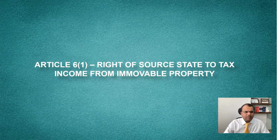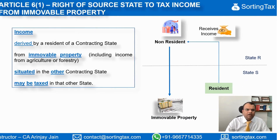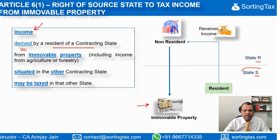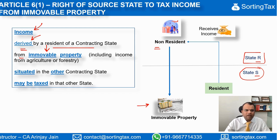Let's look at Article 6, Paragraph 1, which is the right of the state of source to tax income from immovable property. What this article reads is that income derived by a resident of a contracting state — let's say there are two states, State R and State S — where a non-resident who is a resident of State R derives certain income from immovable property situated in State S. The condition is that he should get the income from immovable property, which we'll discuss in a short while.